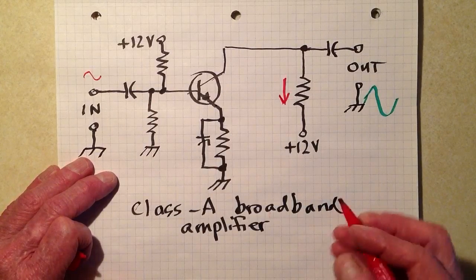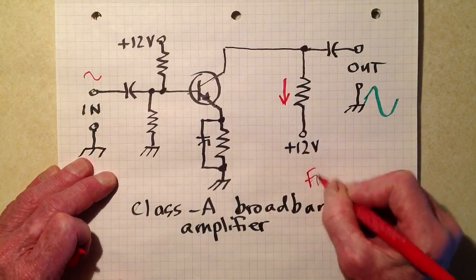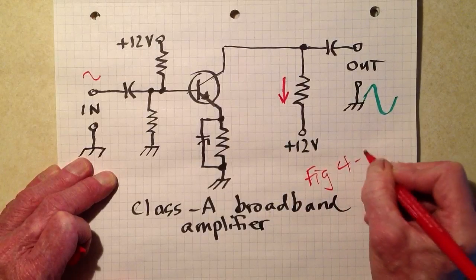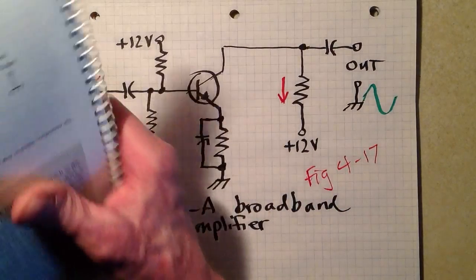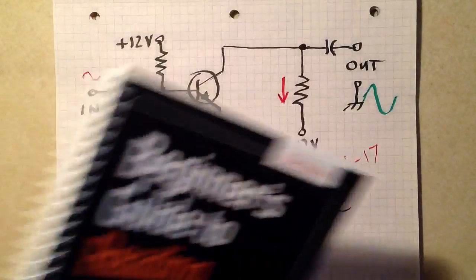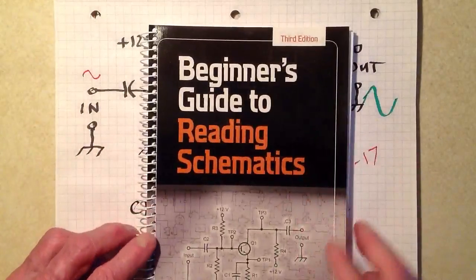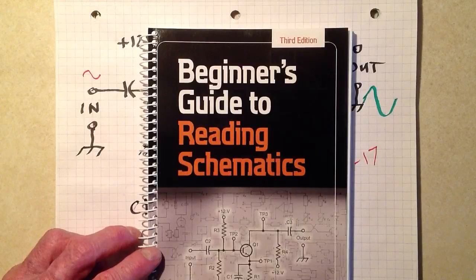So that is figure 4-17 in this book, once again, Beginner's Guide to Reading Schematics and Drawing Them, by the way.